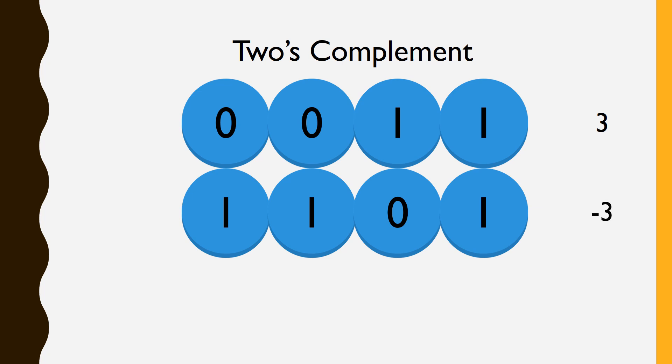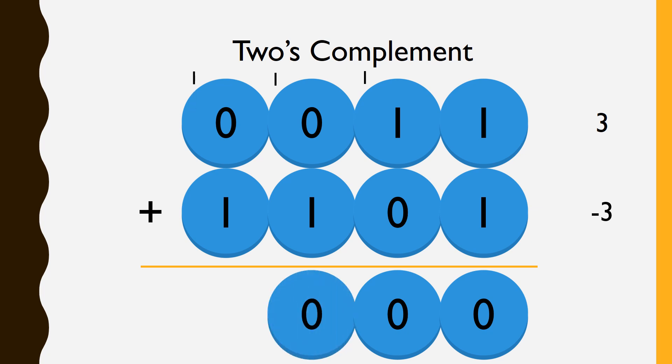Let's do the subtraction. 3 minus 3 is the same as 3 plus negative 3, so from right to left, 1 plus 1 is 2, which is 10, so we write the 0 and carry the 1. 1 plus 1 plus 0 is 10, carry the 1. 1 plus 0 plus 1 is 10, carry the 1. And finally, 1 plus 0 plus 1 is 10, so we write the 0, and since there are no bits left to store the carried 1, 2's complement says that we simply discard it. This result gives us what we're looking for. 3 minus 3 is 0.